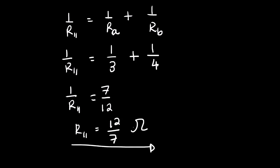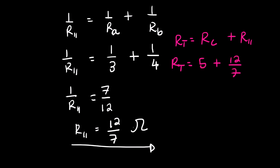From there we calculate R_T: R_T = R_C + R_parallel = 5 + 12/7 = 47/7 ohms. Rounding this off gives us 6.71 ohms.